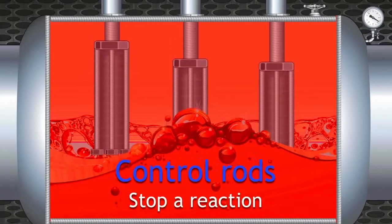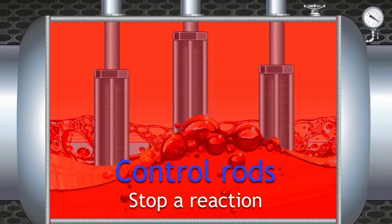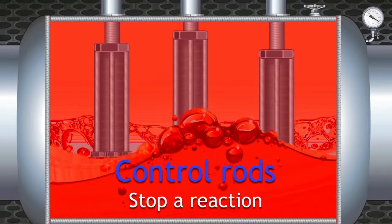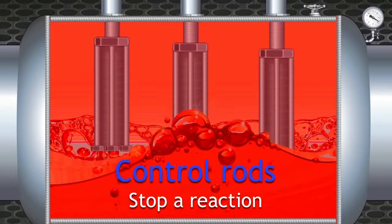When lowered, these control rods stop the reaction if necessary. They are built and positioned in a way that ensures they drop into the fuel in the case of an emergency such as a power cut.